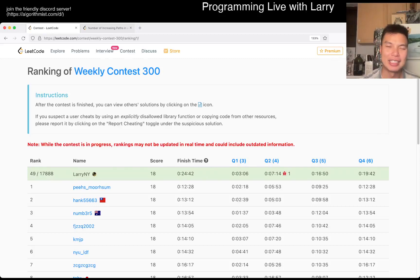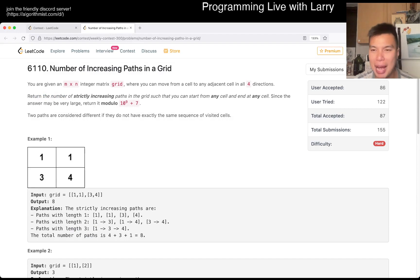Hey, hey everybody, this is Larry. This is me in Q4 of the Weekly Contest 300, Number of Increasing Paths in a Grid. I think this was an easier problem than Q3, not to say that it is easy, but I'll tell you something - I got a little bit of a hint for this one, and I'll tell you what it is. Hit the like button, hit the subscribe button, join me on Discord, let me know what you think about this problem.